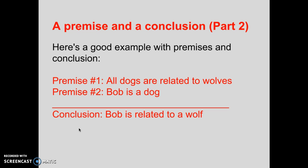Here's a good example with premises and a conclusion. Premise one: all dogs are related to wolves. Premise two: Bob is a dog. Therefore, Bob is related to a wolf. What type of argument is this — inductive or deductive? It's deductive.